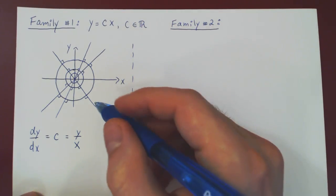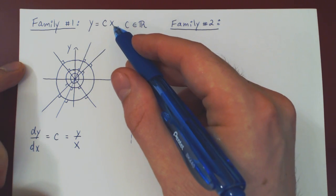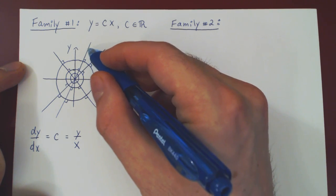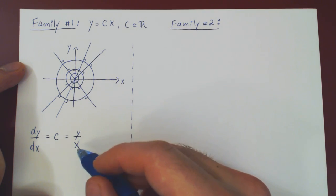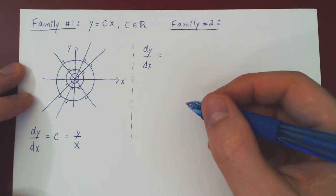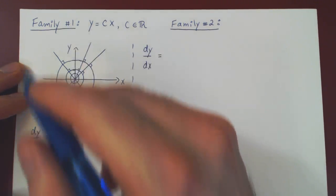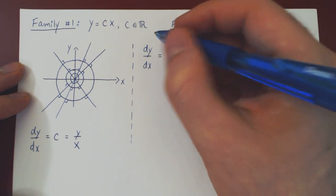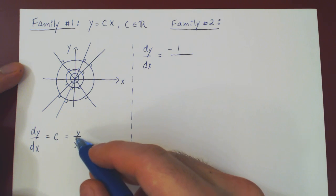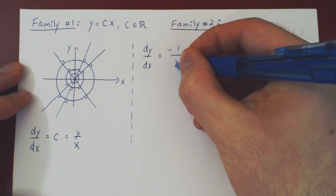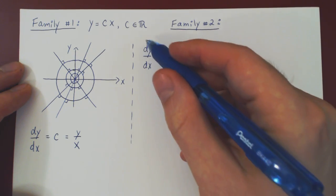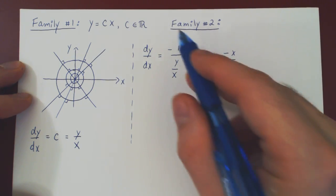Well, the question now is, if at any given point you look at a curve in the first family, the derivative is y over x. At the same point, what should the derivative of the second family be equal to? Well, we want this family to be perpendicular to this family, and we know from our previous video that this means that the derivative of the second family should be minus 1 over the derivative of the first family, being given by y over x. We can simplify, this will be simply negative x over y, and then we have a separable differential equation that the curves in family 2 must satisfy.